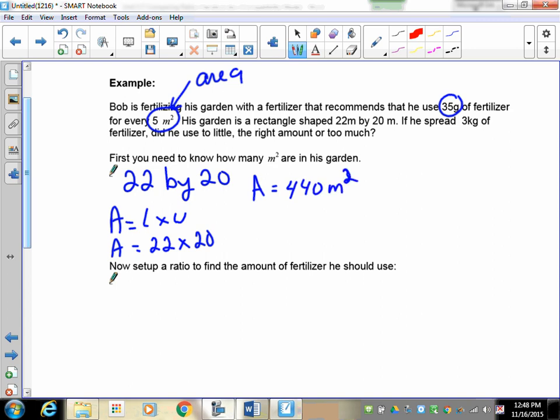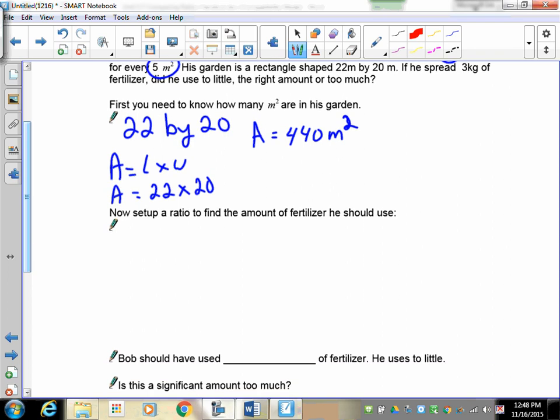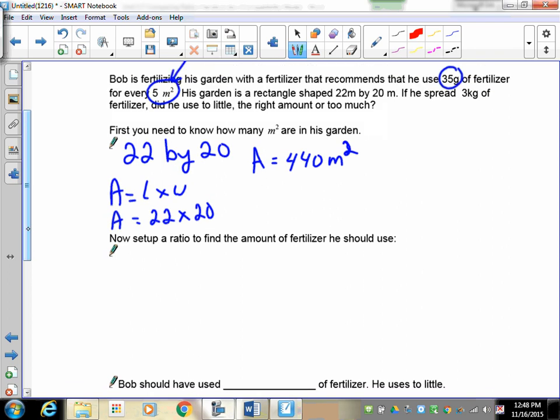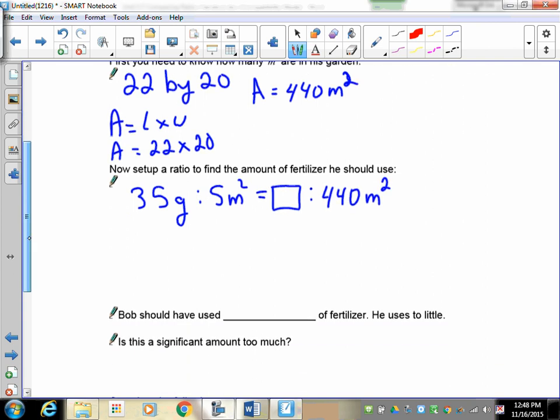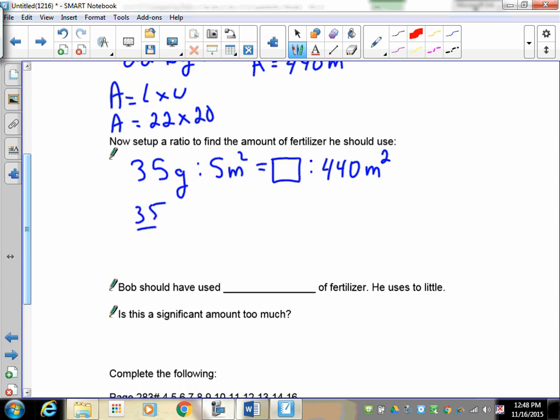Now we set up our ratio to find out whether or not we've done this correctly. He needs to spread, it says here, 35 grams for every 5 meters squared, and we have to keep that equal to our unknown to 440 meters squared. Okay, so here's our two ratios. Turn them into fractions. We've got 35 over 5 equal to the box, or the x over 440. Now multiply both sides by 440. So 35 over 5 times 440 is equal to x over 440 times 440. These cancel.